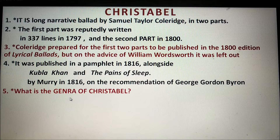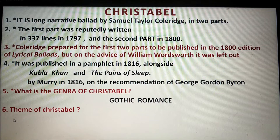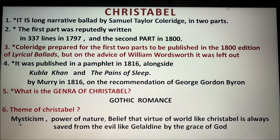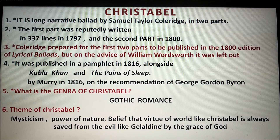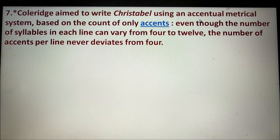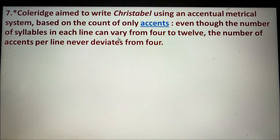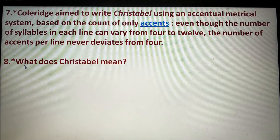Number five: The genre of Christabel is Gothic romance. Number six: The themes of Christabel include mysticism, power of nature, and the belief that virtue — as embodied by Christabel — is always saved from evil — as embodied by Geraldine — by the grace of God. Number seven: Coleridge aimed to write Christabel using an accentual metrical system based on the count of only accents. Even though the number of syllables in each line can vary from four to twelve, the number of accents per line never deviates from four.